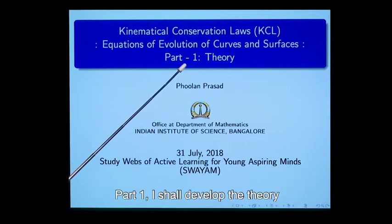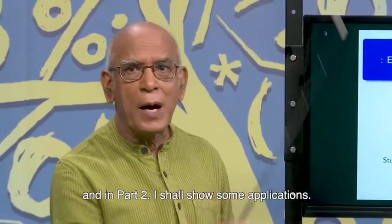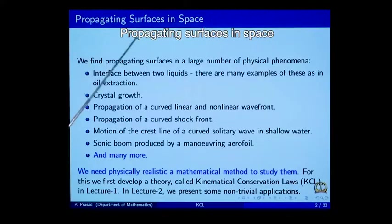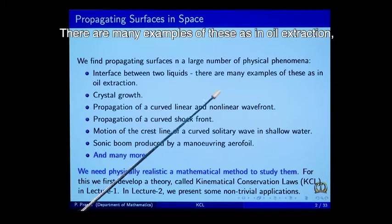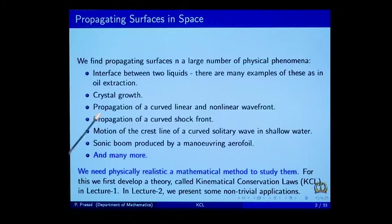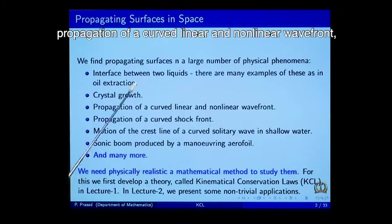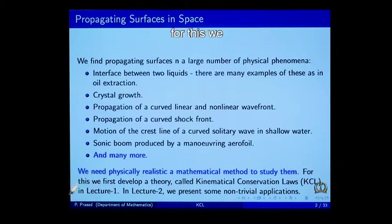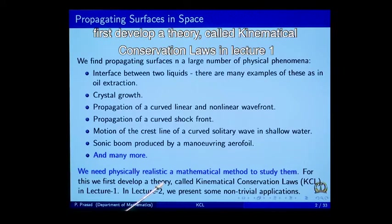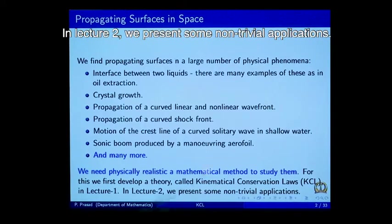There are two parts. In part 1, I shall develop the theory and in part 2, I shall show some applications. Propagating surfaces in space — we find propagating surfaces in a large number of physical phenomena: interfaces between two liquids, oil extraction, crystal growth, propagation of curvilinear and non-linear wave fronts, and many more. We need physically realistic mathematical methods to study them. For this, we first develop a theory called kinematical conservation laws in lecture 1. In lecture 2, we present some non-trivial applications.